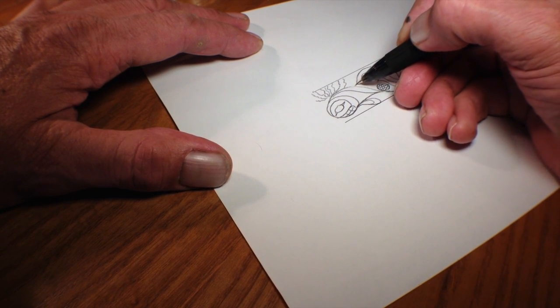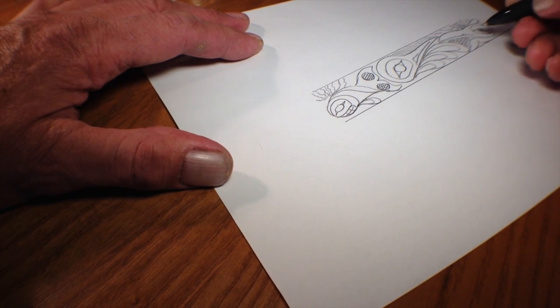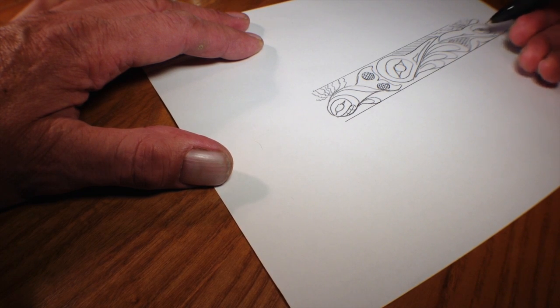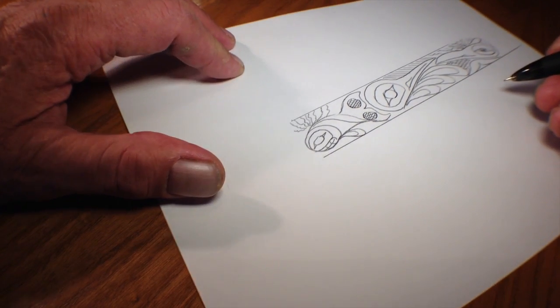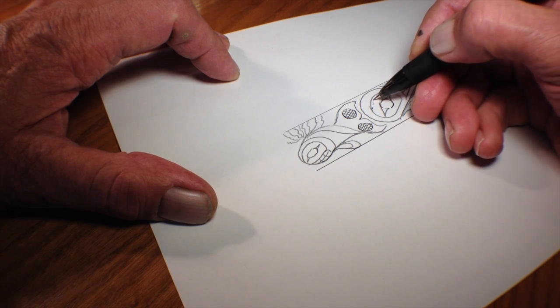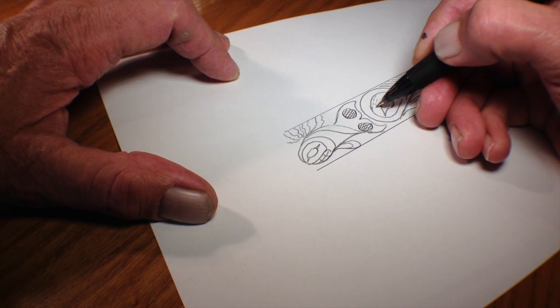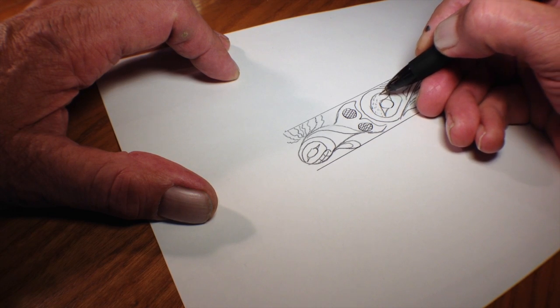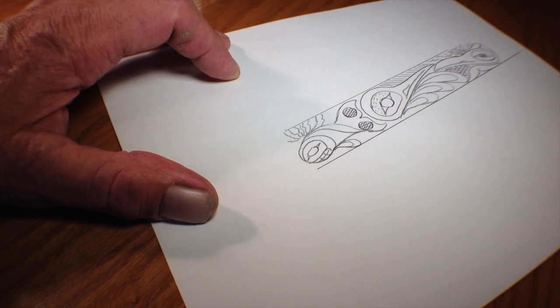So this is the hummingbird bracelet with the whale and the raven. I'll just do a little more work here and then I'm going to transfer it onto the silver, and away we go.